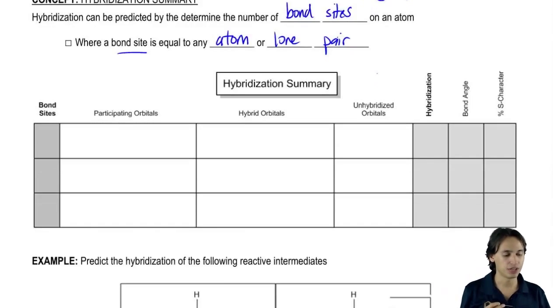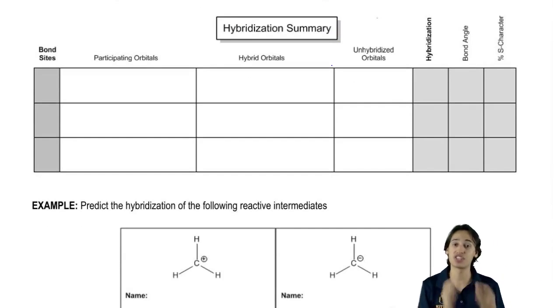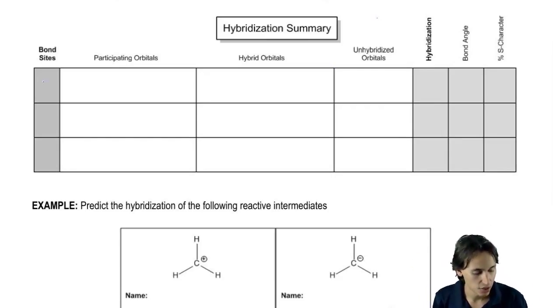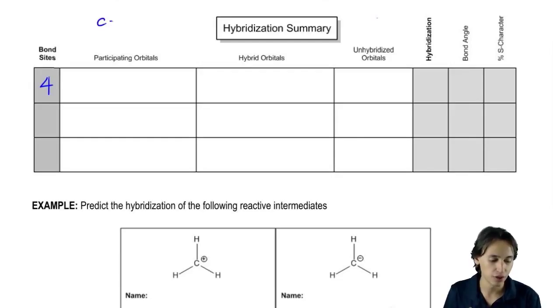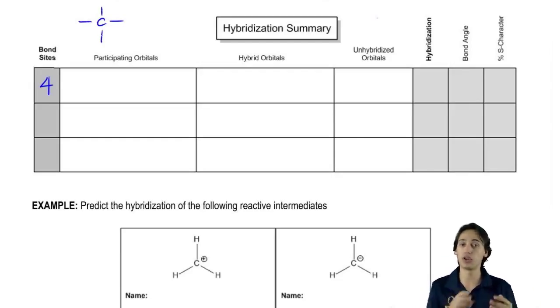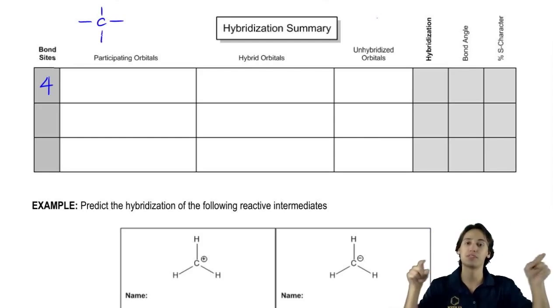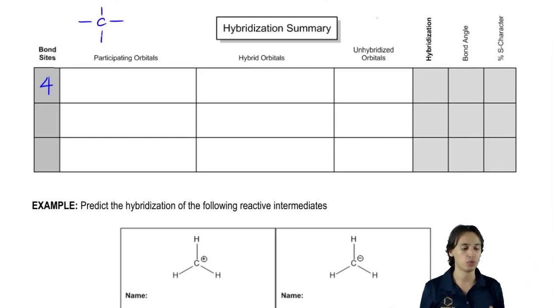So what I want to do is go through a hybridization summary and help you guys realize how just by looking at bond sites, we can determine everything about these atoms in terms of hybridization. So let's start off with four bond sites. What happens if I have a combination of atoms and lone pairs that gives me four bond sites? For example, let's say that I just have a carbon with four bonds on it.